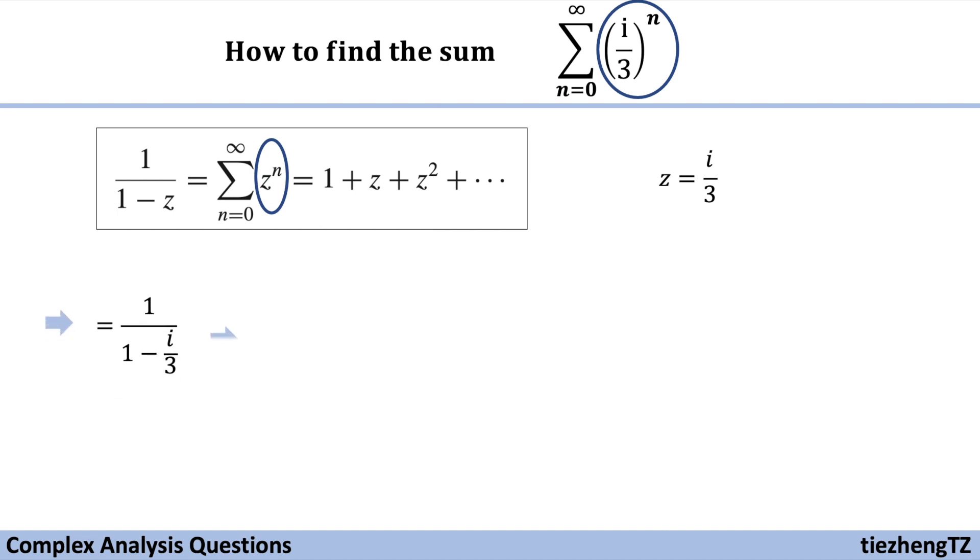So it becomes 1 over 1 minus i over 3. And then we can just simplify this step by step. And here is our final solution, which is 9 over 10 times 1 plus i over 3.